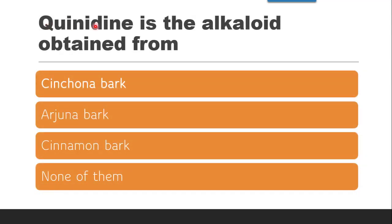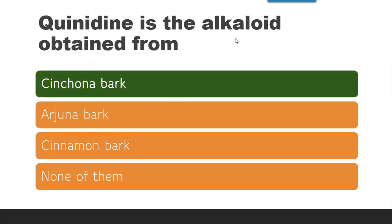The next question is: quinidine is an alkaloid obtained from which bark — cinchona bark, arjuna bark, cinnamon bark, or none of them? The correct answer is quinidine is obtained from cinchona bark.